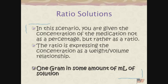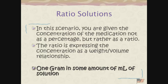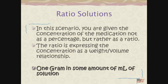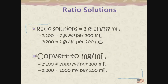Isoproterenol 5 milligrams of a 1 to 100 solution — so 1 to 100 is a ratio. And I'm going to mix it in 2 milliliters of normal saline, small volume nebulizer every four hours. So I'm not given a concentration like a 5% or 2.25% solution — here I have a ratio. The ratio is a weight-volume relationship: 1 gram in some amount of milliliters of solution.